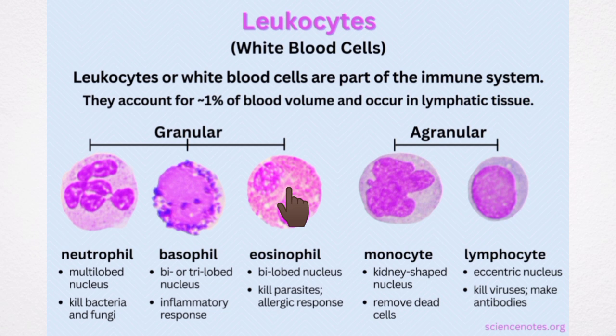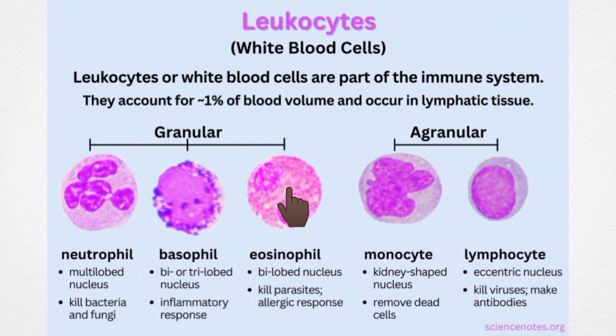Eosinophils have coarse granules in the cytoplasm. The cytoplasm stains pink or red with eosin. The nucleus is bilobed and spectacle-shaped. They have a diameter of 10 to 14 microns.